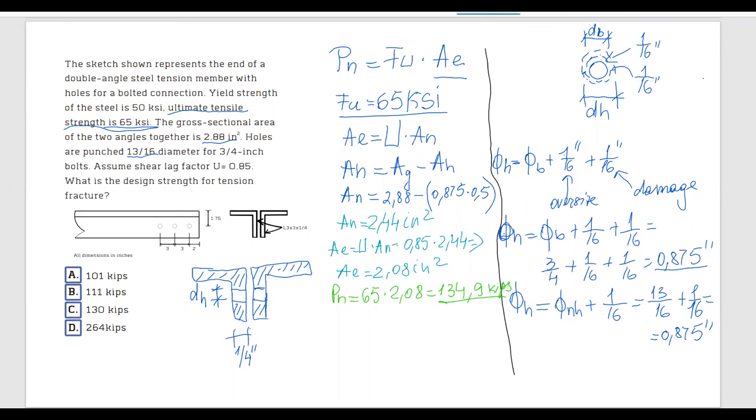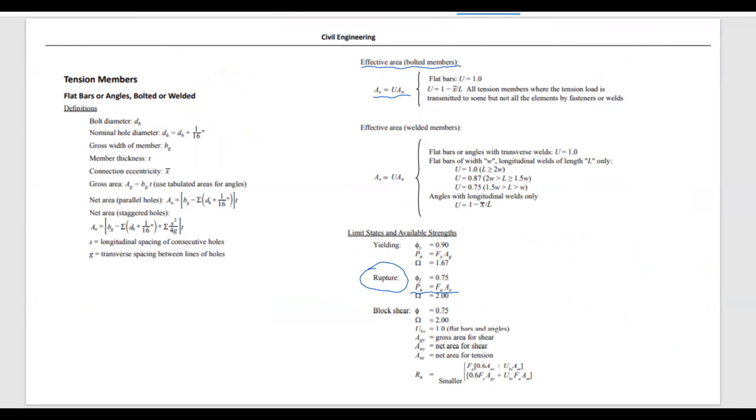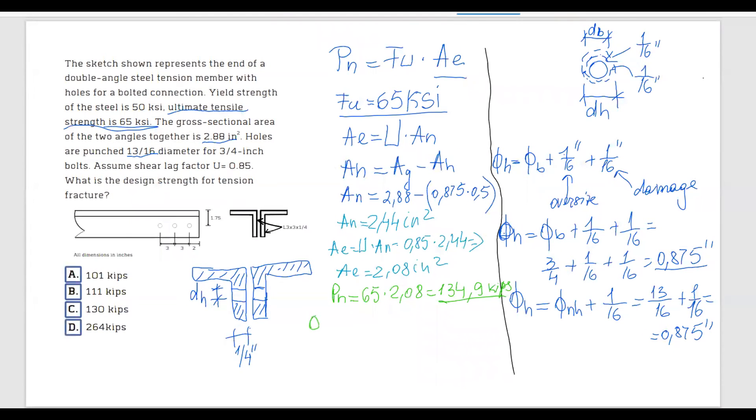Again, I hope you know by now that you cannot stop here. The problem is asking us to calculate the design strength for tension and not the nominal strength for tension. So going back to the FE handbook, the phi for rupture is 0.75.